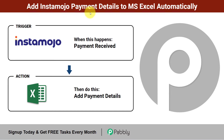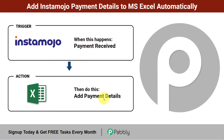In this video we will learn how to add Instamozo payment details to MS Excel automatically. If you are selling something using the Instamozo payment gateway and whenever a payment is received, you want to add the details of that payment automatically and instantly to MS Excel — like the customer name, customer email, and the amount. To do this automation, you just need to connect Instamozo and MS Excel with the help of an automation software.